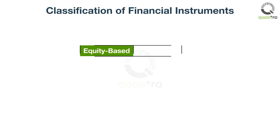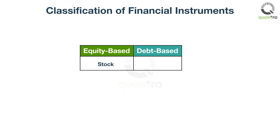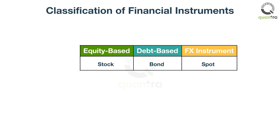A financial instrument can be divided according to asset class, which depends on whether they are equity-based or debt-based. Equity-based financial instruments represent ownership of an asset — for example, a share of a company. Debt-based financial instruments represent a loan made by an investor to the owner of the asset — for example, bonds. Currency instruments and their transactions on foreign exchanges are neither debt nor equity-based, and are usually classified separately.